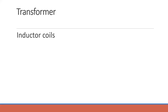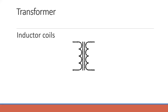Next is the transformer. A transformer contains two or more inductor coils. The energy generated is transferred from one coil to another via a magnetic field. The symbol shows the two coils with the transfer via the magnetic field represented by two lines. The most common use of transformers is for stepping up or stepping down voltage levels.